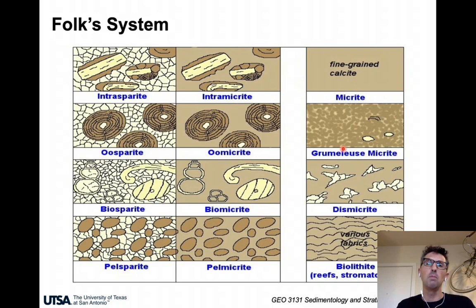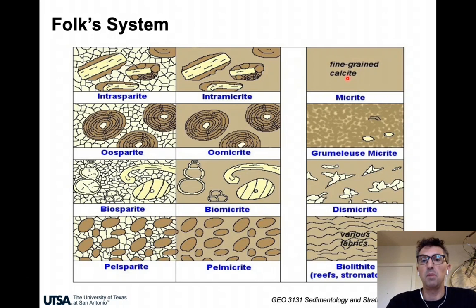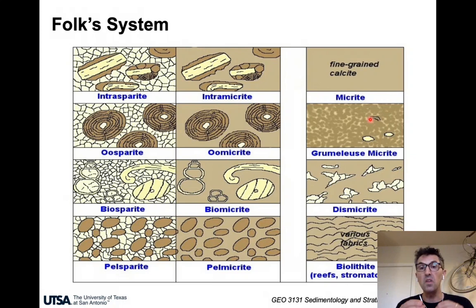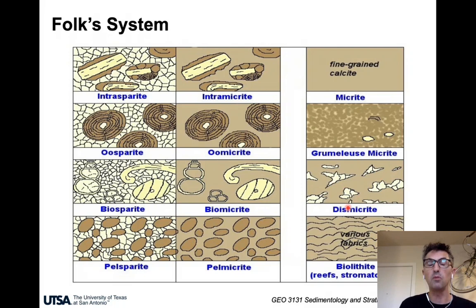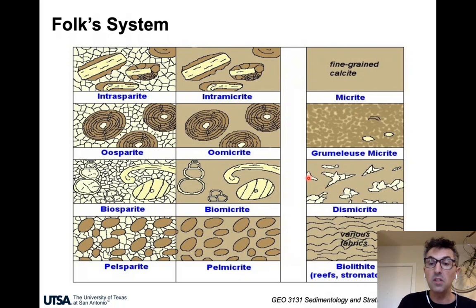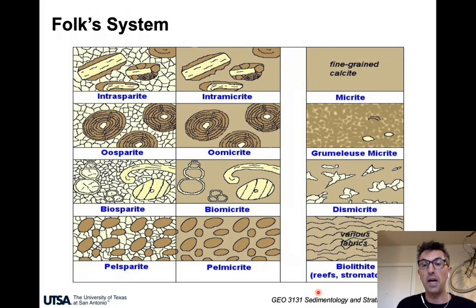Some special cases on the right-hand side: if we have no allochems at all, the rock is called a micrite — a carbonate mud that has been lithified. The grumulous micrite corresponds to a lithified mud where within the mud we can see little pods of different texture or color — that's what the word grumulous refers to. A dismicrite corresponds to a micrite that exhibits pockets of dissolution — holes filled by sparite — illustrated by those polygons in the picture. And biolithite corresponds to a carbonate rock formed by precipitation of calcite mediated by living organisms such as reefs or stromatolites.